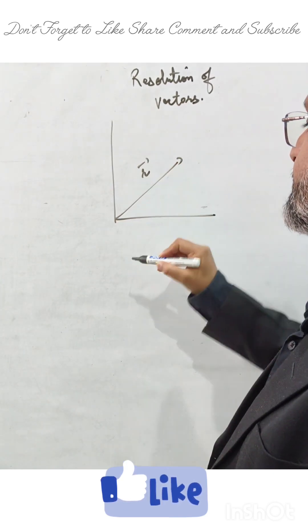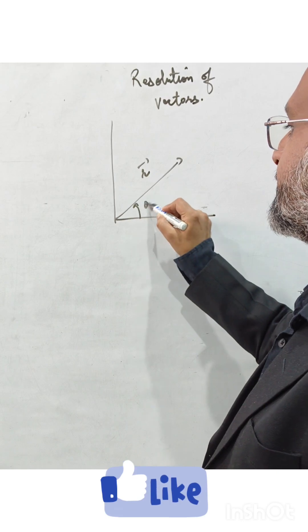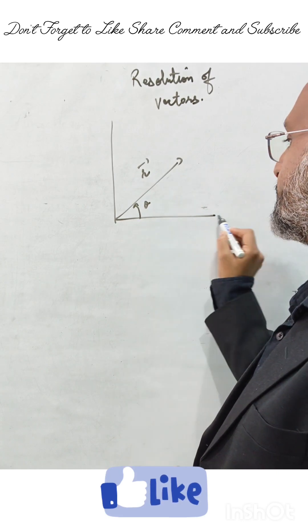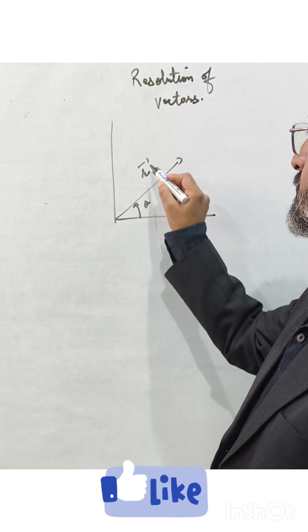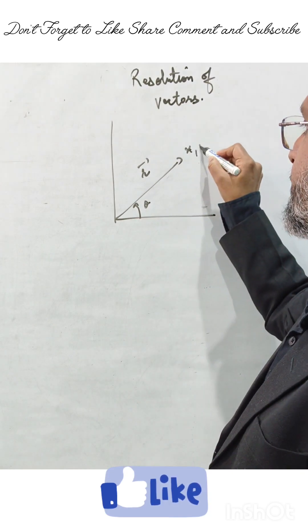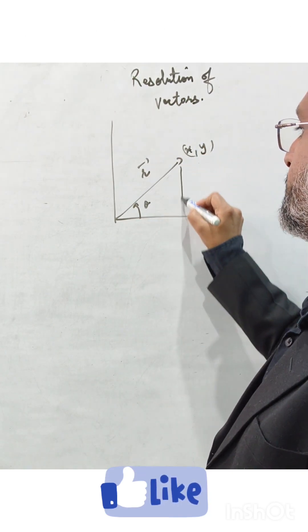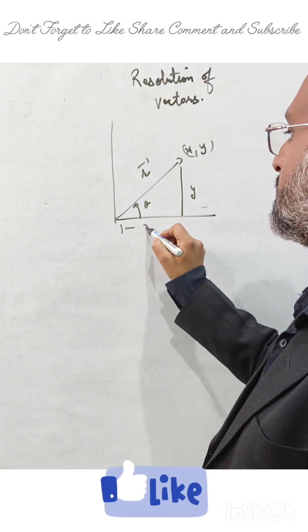Suppose we have an r vector inclined at an angle theta. All angles are measured from the x-axis in the anti-clockwise direction and are taken as positive. The coordinate of r is x comma y. This will be y and this will be x.